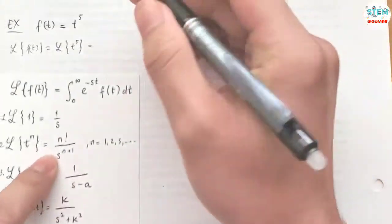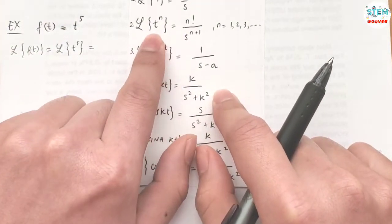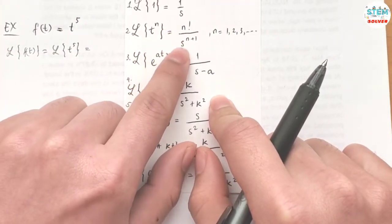So here's the formula for it: the Laplace transform of t^n is equal to n factorial over s to the n+1.